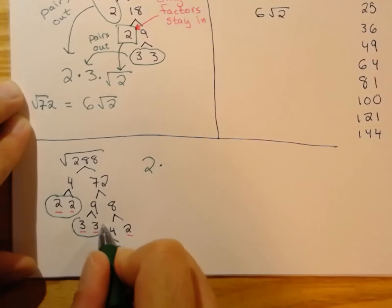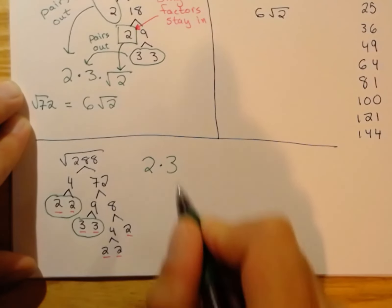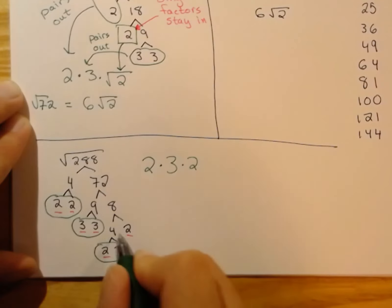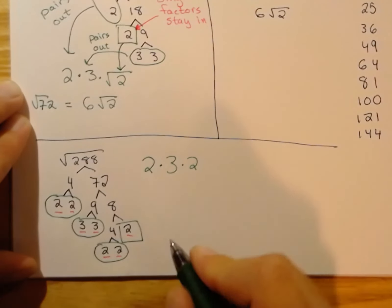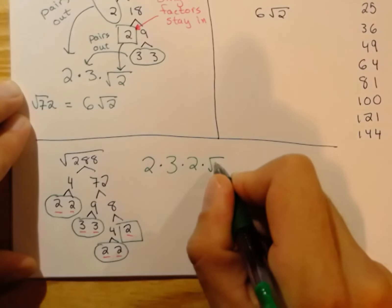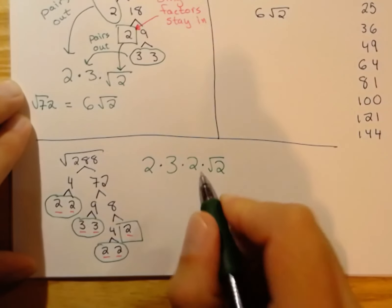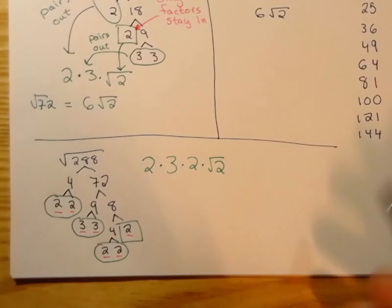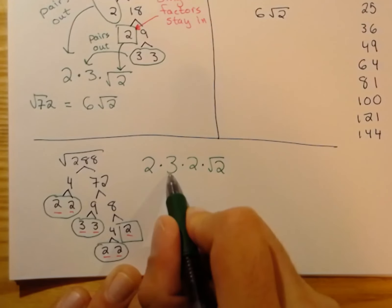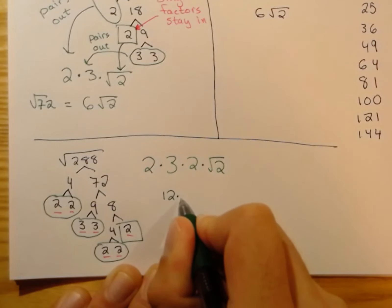This pair of 3s will come out once. And then this lonely 2 does not have a partner, so he needs to stay in the radical. And then once we figure out which factors come out, which factors stay in, re-multiply. So 2 times 3 is 6. 6 times 2 is 12. 12√2.